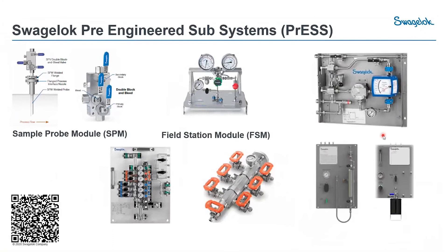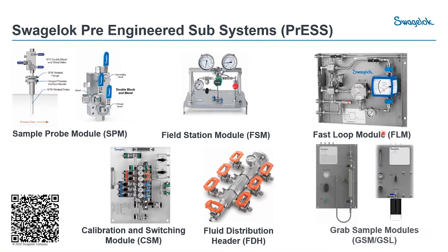Swagelok offers what we call pre-engineered subsystems. On this page you can see all of them, starting with the sample probe module — either a retractable type or a fixed probe with double block and bleed valves. There is also a field station for pressure drop-down, a fast loop, and a calibration switching module for multiple streams to a single analyzer. You also have a fluid distribution header and a grab sample module — available as a cylinder type for gas or a container style for liquid.